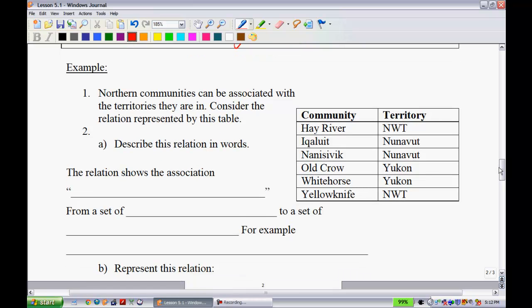Example one. Northern communities can be associated with their territories therein. Consider the relation represented by this table. Describe the relationship in words. Let's look at the relationship. We have the communities on the left hand side and we have the territories. These are all territories we're dealing with. We can say that we know that Hay River is located in Northwest Territories. Old Crow is located in Yukon and so on down the list. The relation shows the association is located in. It takes a town and tells you what province it's located in. From a set of northern communities to a set of territories.